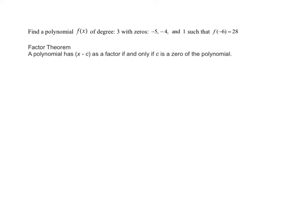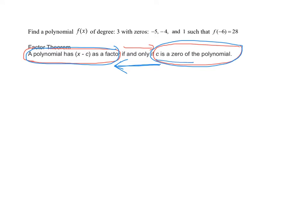Let me explain what this if and only if means. It means if (x - c) is a factor of the polynomial, then c has to be a zero of the polynomial. But it also says if c is a zero of the polynomial, then (x - c) is a factor. We're going to use the factor theorem in this direction. Since we're given zeros, we want to find factors that will help us find our polynomial.